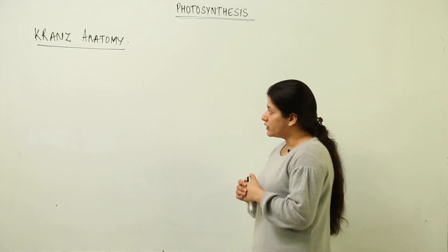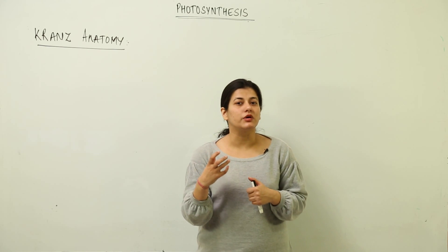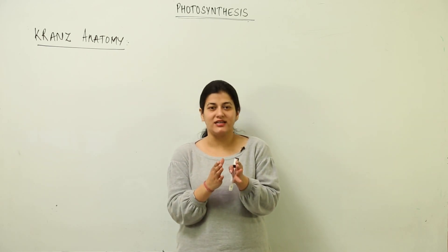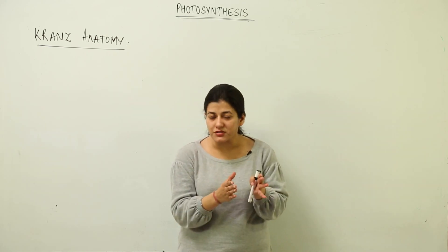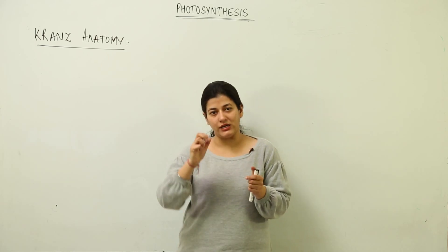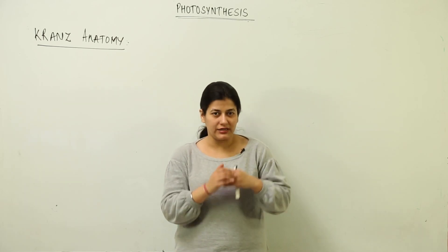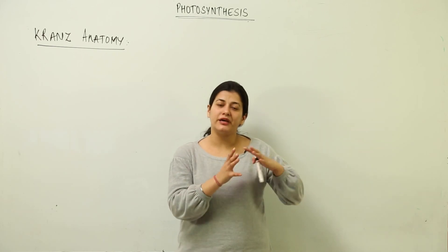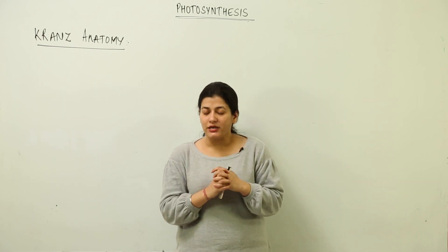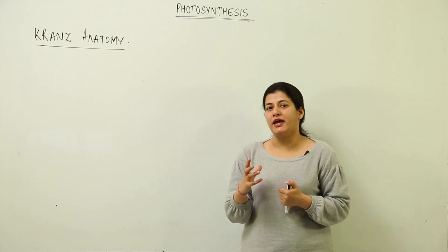After the C3 cycle, we discussed photorespiration, which we termed a wasteful process because oxygen was taking over the activity of Rubisco. This led to waste of carbon dioxide and waste of ATP. Now we are going to deal with a special kind of anatomical difference found in certain plants.